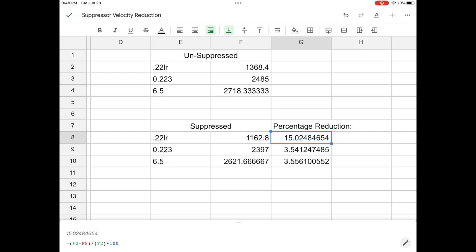Granted, these are sample sizes of five, so I could make it bigger, but it does give us a general idea. The .223 had a velocity reduction of about 3.5%, and same with the 6.5 Creedmoor, also about 3.5%. So even though these are small sample sizes, we do see a velocity reduction of about 3% on most projectiles, with .22 long rifle having a bit more.